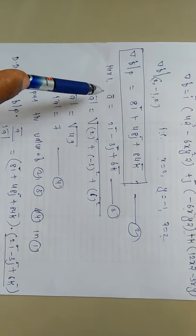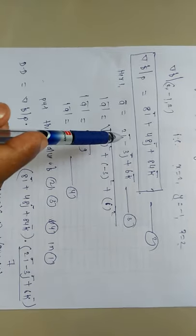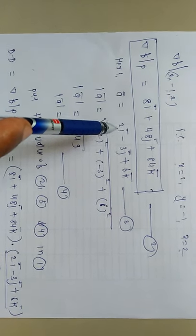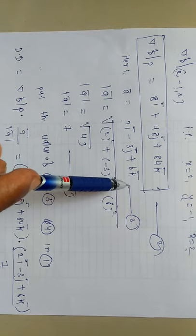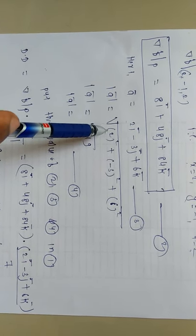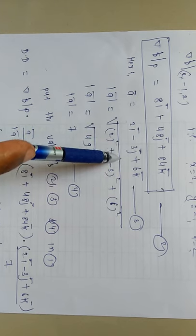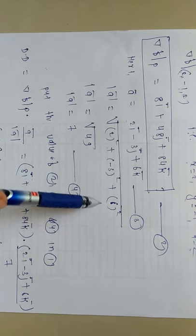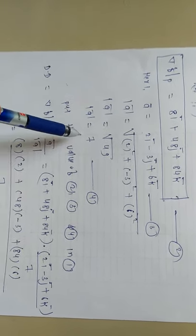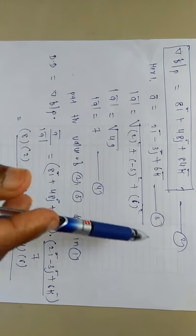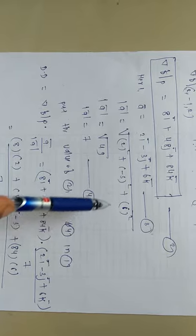Next, we find a-bar. In this problem, a-bar is already given as 2i minus 3j plus 6k. To find its modulus, we take the square root of the sum of squares of the coefficients: square root of (2² plus (-3)² plus 6²), which simplifies to square root of 49, that is 7. So the modulus of a-bar is 7.